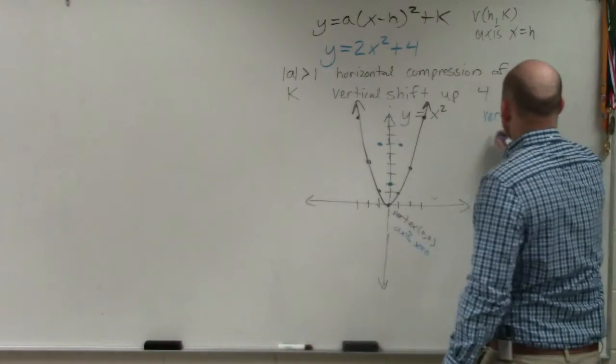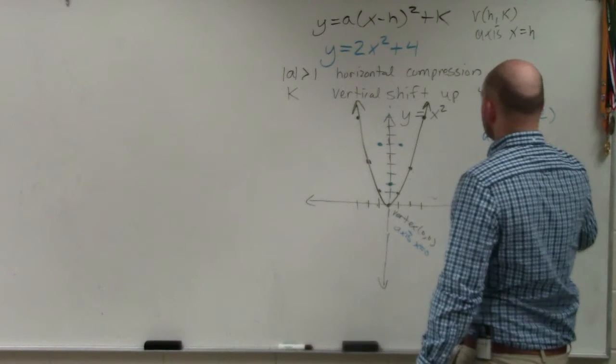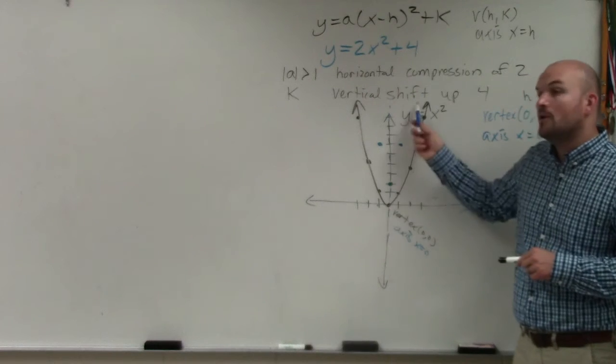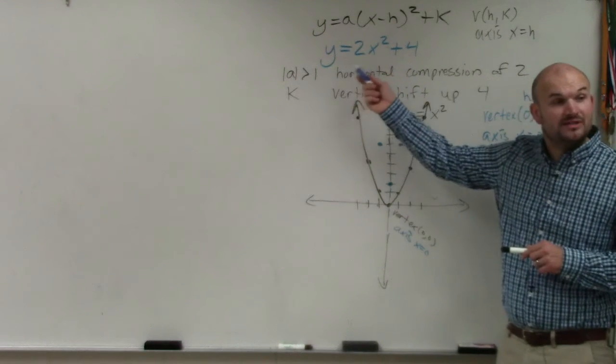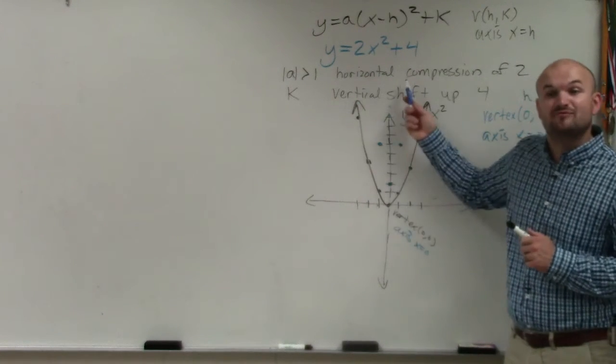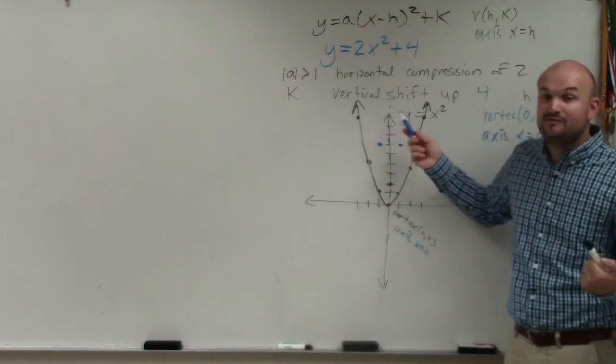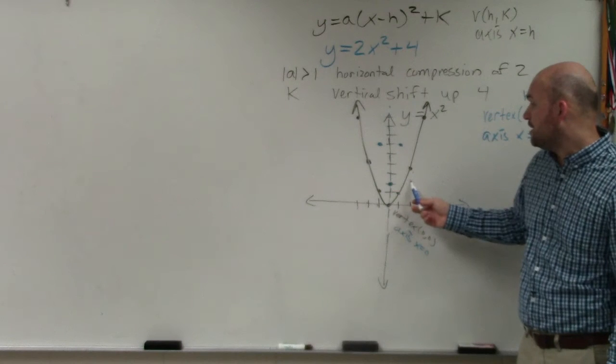Because that's your h, so your axis is still x equals 0. Again, if you go over 2, you'd go up 4. Well, now you're multiplying that by 2. So when you go over 2, instead of going up 4, going up times 4 times 2 would give you 8. So I'd go over 2, up 8.